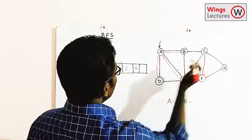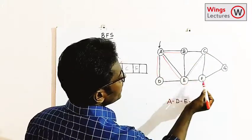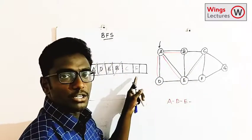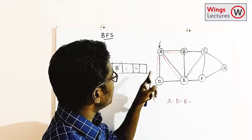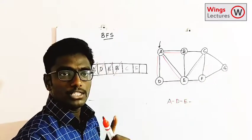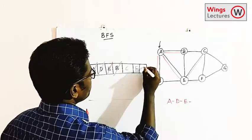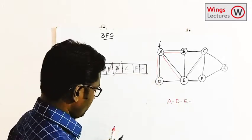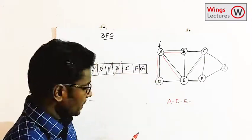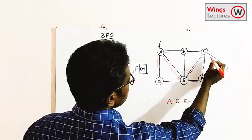Coming to C — from C the adjacent vertices are B, E, F, and G. B is already visited, E is already visited, F is already in the queue. Only G is not yet visited, so we insert G into the queue.